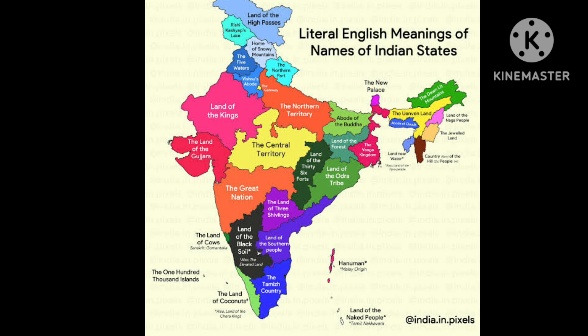Some meanings are just crazy — Andaman and Nicobar: Andaman relates to Hanuman and Nicobar means 'land of the naked people.' There is also 'land of the southern people,' the Tamralipta kingdom, and Kerala meaning 'land of coconuts.' It's quite epic to see what these state names literally mean.